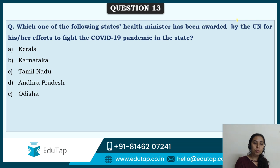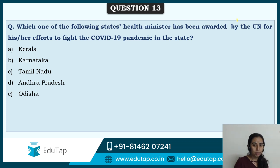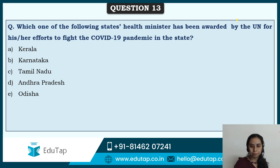Question 13: Which state's health minister has been awarded by the United Nations for efforts to fight the COVID-19 pandemic? The state was doing well against the pandemic, and the health minister was given recognition by the United Nations. The answer is Kerala — K.K. Shailaja has been honored by the United Nations for efforts to fight against the COVID-19 pandemic.